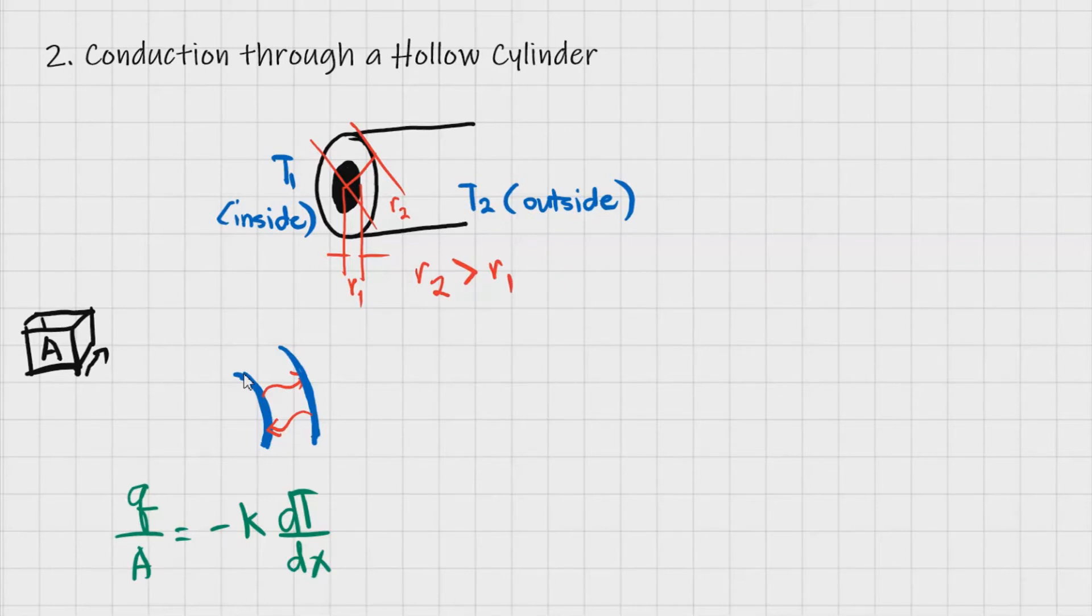So for that case, let's try to derive the equation for our conduction through hollow cylinder. We'll be using the same formula, but in this case, we need to replace our area with the area of our hollow cylinder. Now, question: which area will we use? Is it 2πrL, or πr squared? Okay? So choose, and then check if it's correct. The answer is this one. Okay? Not this one.